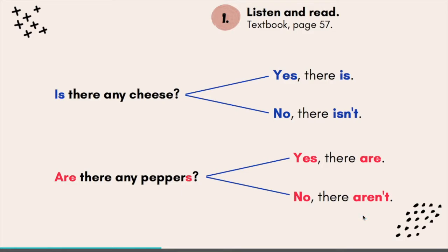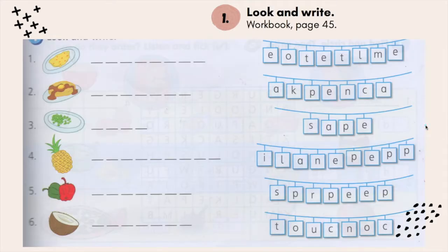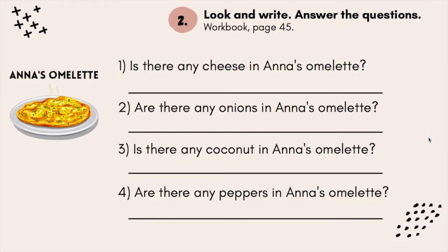Now let's do some exercise. Look at your workbook, page 45. Rearrange the letters to form the correct spelling. Next, the second exercise on the same page, workbook page 45: look and write.